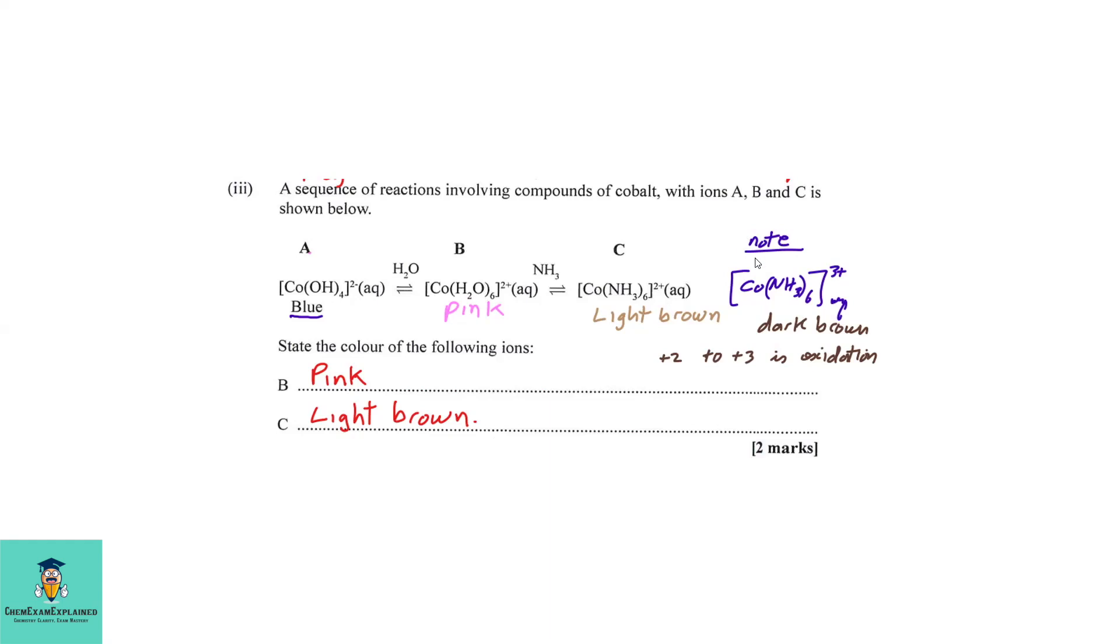I added here that if you leave part C to stand, it will be oxidized to hexa amine cobalt 3+ ions, which is now dark brown. So when I say leave to stand, air would be the oxidizing agent, but you could use hydrogen peroxide as well to do the job. So the color of B would be pink. The color of C would be light brown. And if you use a peroxide or you leave to stand, it will turn to dark brown.